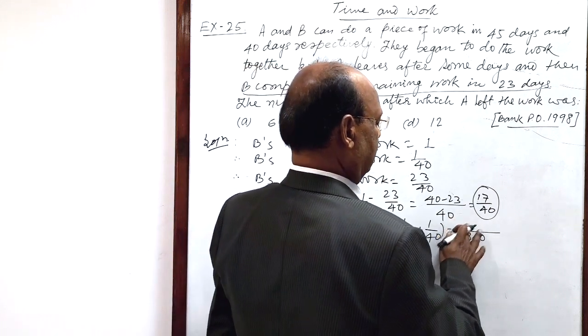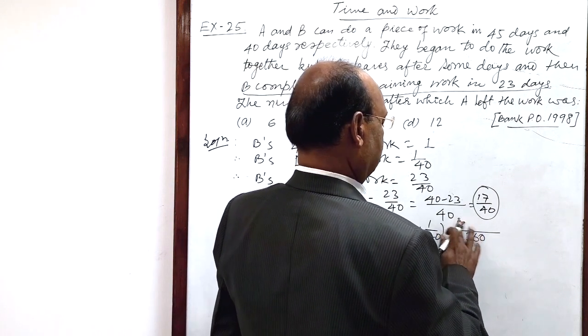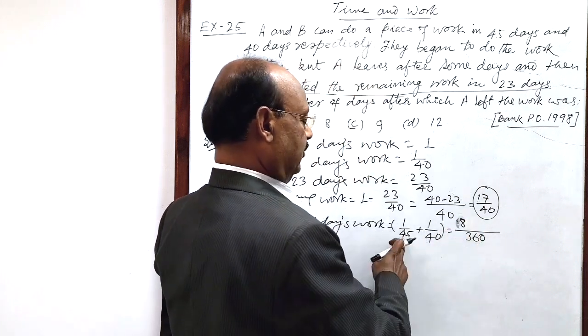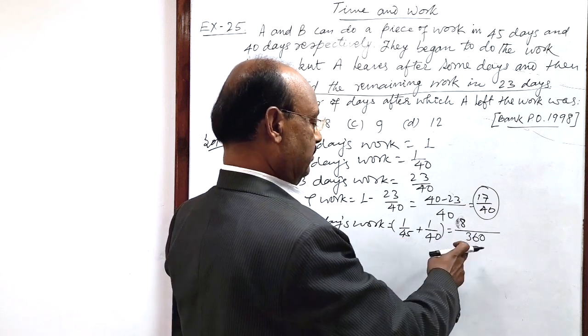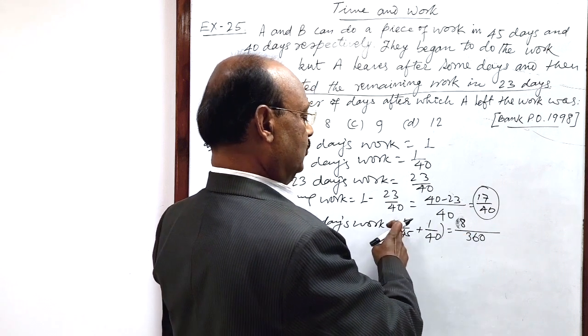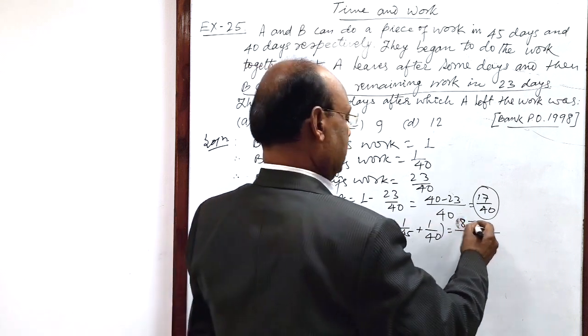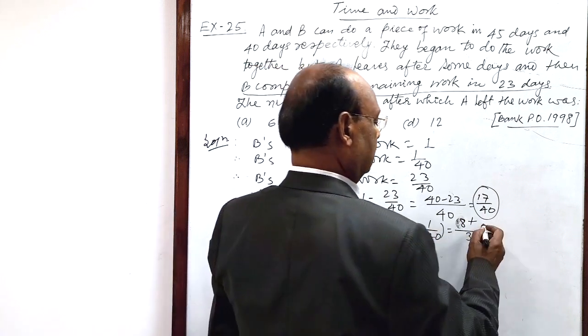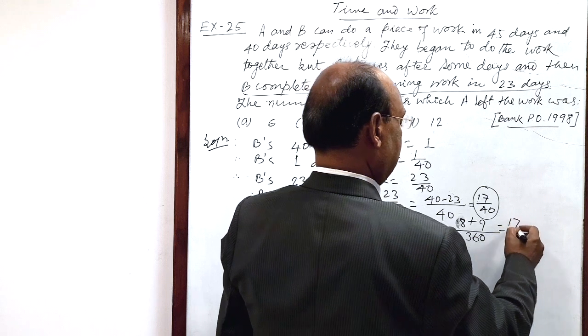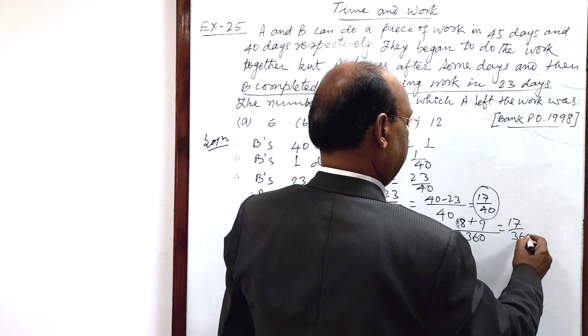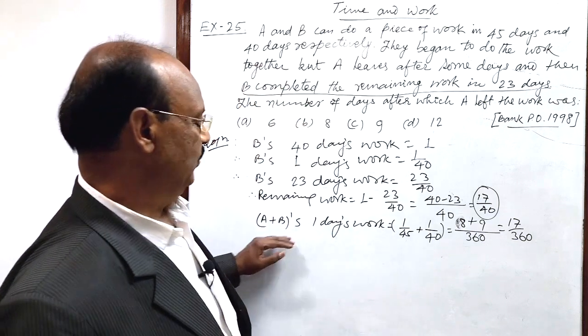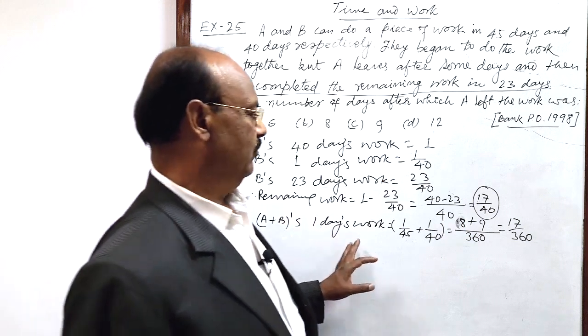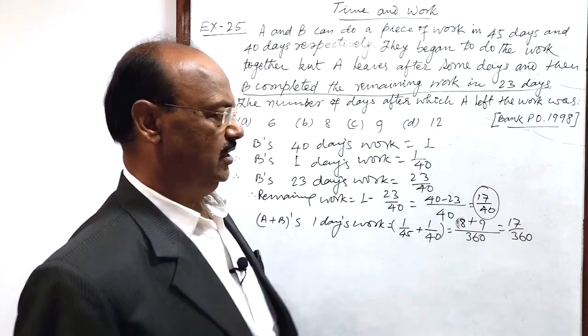8. No, 8. This is 8. Sorry. How 8? Because when we divide 360 by 45, this will be 8 times and this 8 into 1 is 8 plus when we divide 360 by 40, that will be 9 times 9 into 1. So this is equal to 17 by 360. This is A plus B's one day's work. When A and B are working together in one day, amount of work done is 17 by 360.